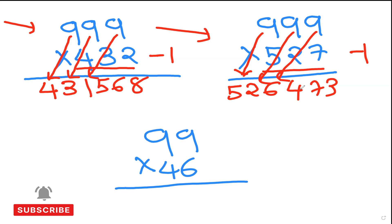And you can also use the same technique if you are multiplying any two-digit number by 99. So let's say 99 times 46. So 46, I will minus 1, which will give me 45.